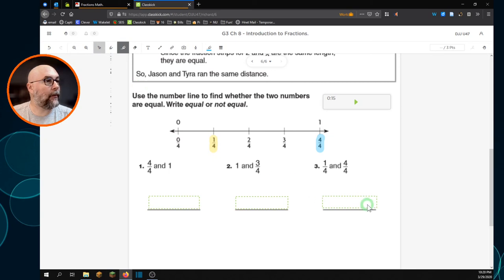So, in here, I'm going to write, not equal. And you can see that turn green. That's because I got that right. Easy enough.